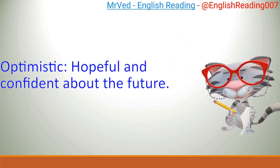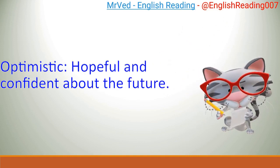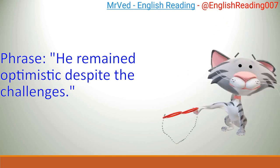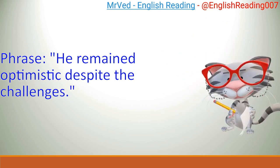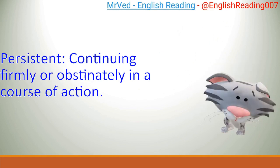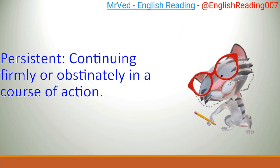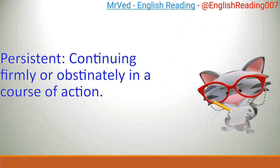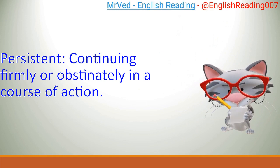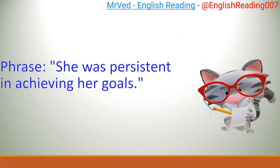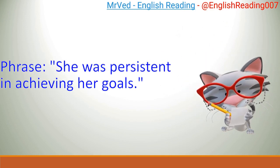Optimistic: hopeful and confident about the future. Example: He remained optimistic despite the challenges. Persistent: continuing firmly or obstinately in a course of action. Example: She was persistent in achieving her goals.